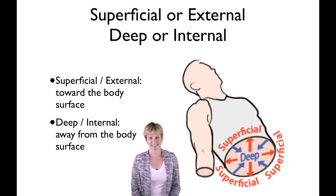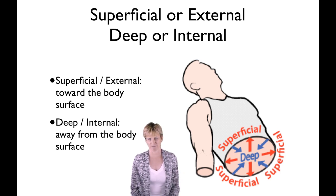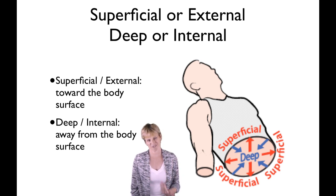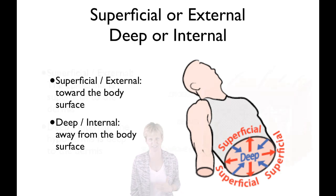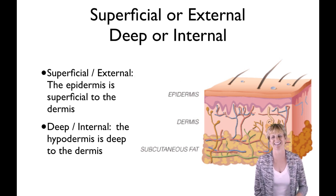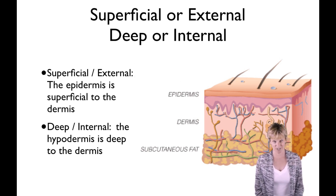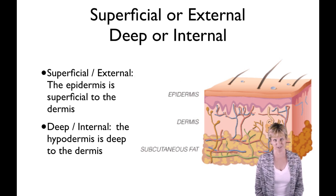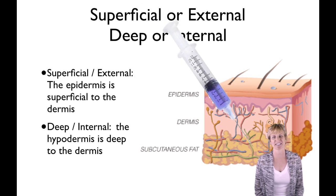Superficial or external, and deep or internal — you can pick which terms you like and you'll see both in very common use. Superficial or external means toward the body surface; deep or internal means away from the body surface. We use these a lot when talking about layers. For example, in the skin, the epidermis is superficial to the dermis — it is external, closer to the outside. The hypodermis, where you see that layer of subcutaneous fat, is deep to the dermis. Hypo actually means below. And hypodermic needles are needles injected into the hypodermis.